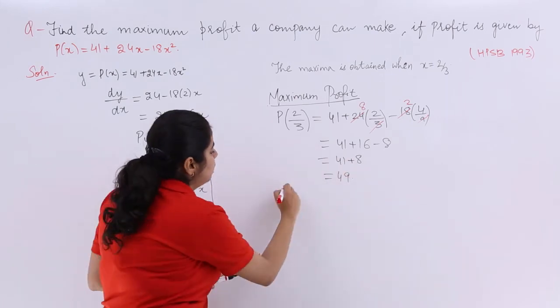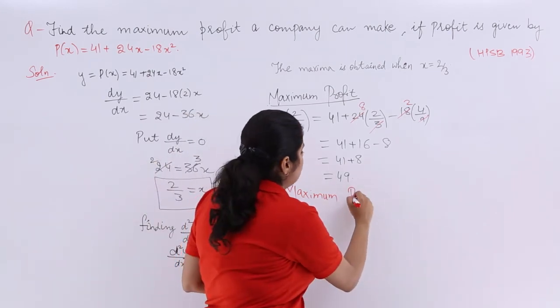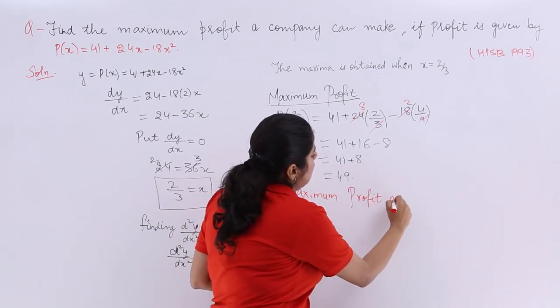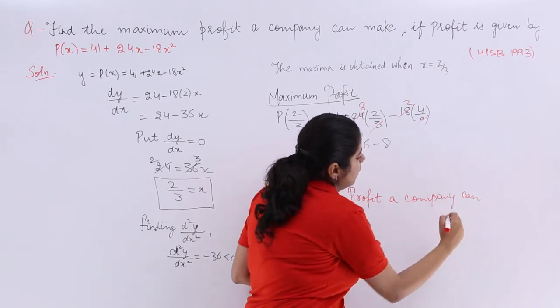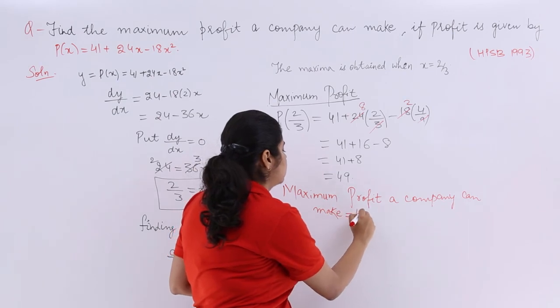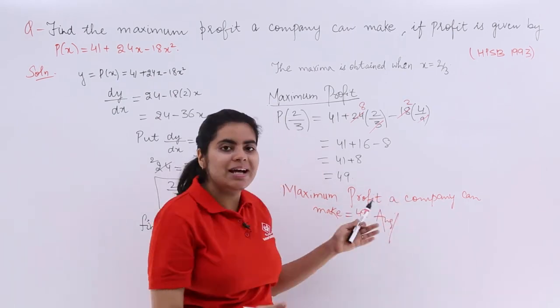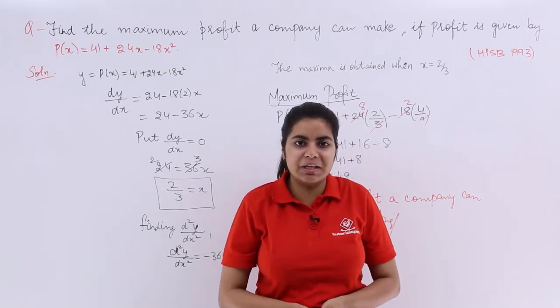So the maximum profit that a company can make is what? It is 49. So maximum profit a company can make is 49 and that is your answer. So this is how you do the questions based on maxima minima using the second order derivative test.